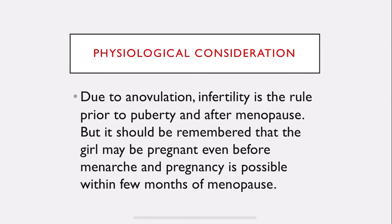Similarly, pregnancy is possible within a few months of menopause. Even after a woman reaches menopause — the permanent cessation of menstruation — she does not reach it suddenly. There will be a reduction in cycles, two months apart or six months apart, so there is a possibility that pregnancy can occur even within a few months of menopause, since ovulation is still possible before the final period.